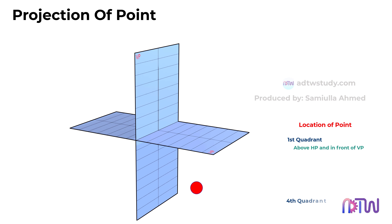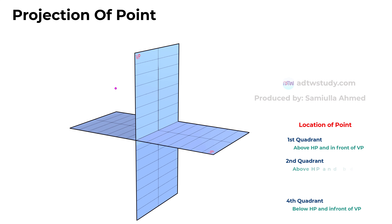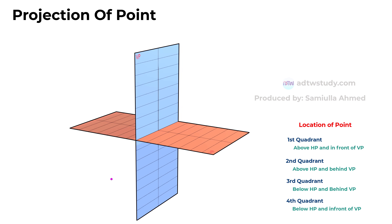For a point in the fourth quadrant, it is positioned in front of VP and below HP, given its location in front of the vertical plane and below the horizontal plane. In the second quadrant, a point is represented as being above HP and behind VP. In the third quadrant, the point is described as behind VP and below HP, being positioned behind the vertical plane and below the horizontal plane.